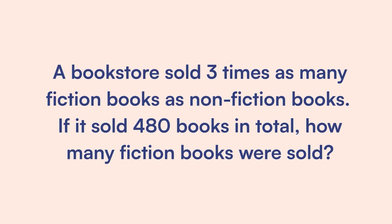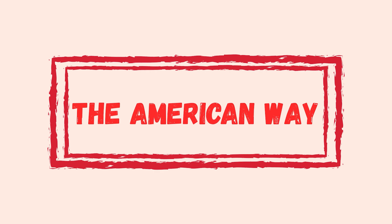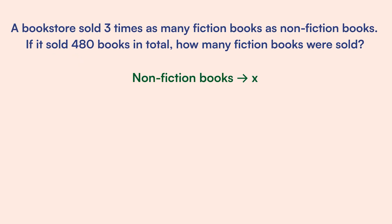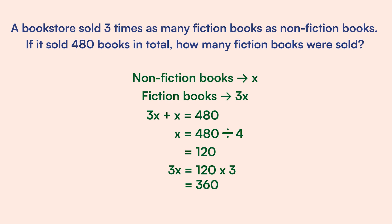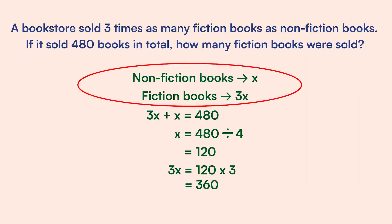This is a sample SAT math problem and it is a very easy one, but it has some of my top high school students stumped. American students would set the number of non-fiction books as x, which means that the number of fiction books would be 3x. 3x plus x would give us 480 because the total is 480 books. So 1x would give us 480 divided by 4, which is 120. Since we want the number of fiction books, we need to find 3x, and 3x is 120 times 3, which equals 360.